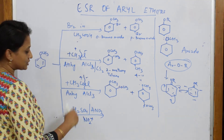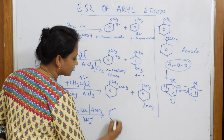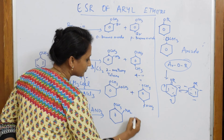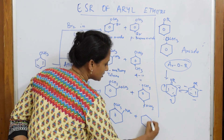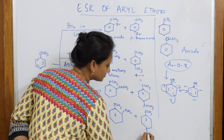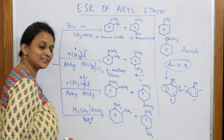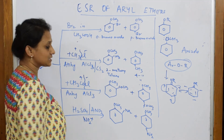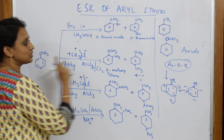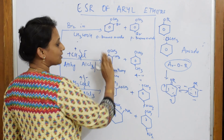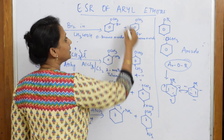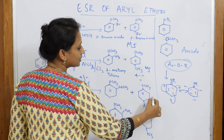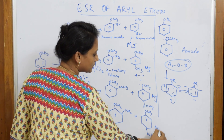For nitration, you can write NO2 at ortho plus OCH3 at para. Observe carefully how to write this: ortho-nitro-anisole and para-nitro-anisole. Anisole basically shows only two products — ortho and para — in all these reactions. Everywhere, para is the major product. Always para is the major product because of its symmetrical nature.